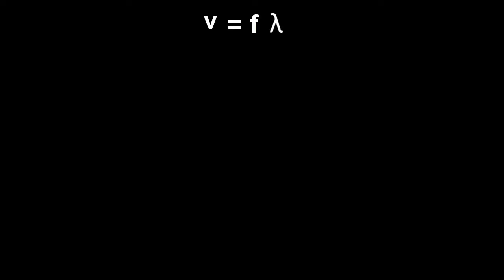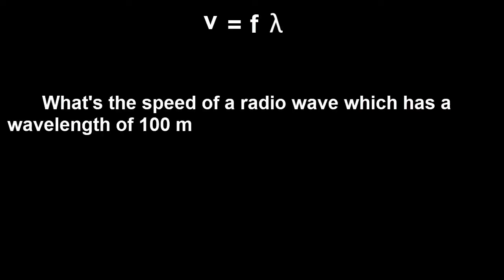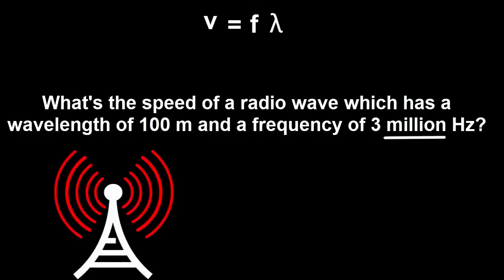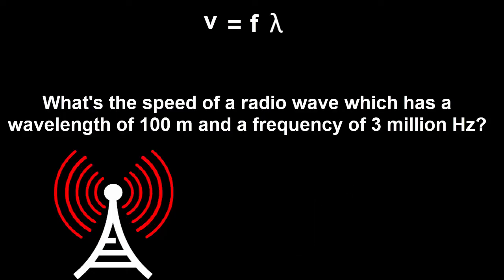Try this one. What's the speed of a radio wave which has a wavelength of 100 meters and a frequency of 3 million hertz. By the way, 3 million hertz can also be called 3 megahertz. Substitute 3 million hertz for f and 100 meters for lambda.